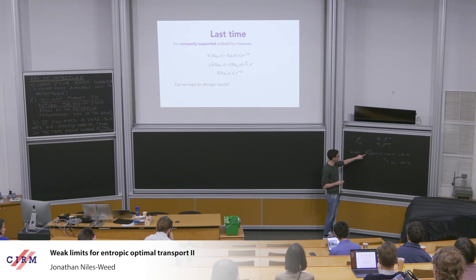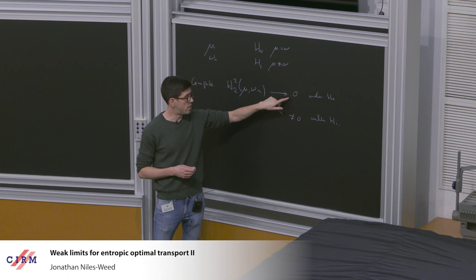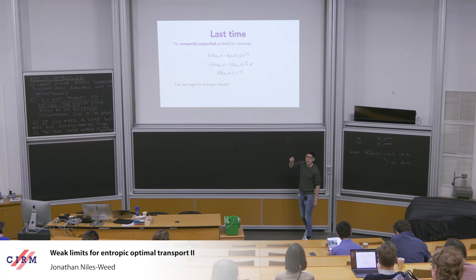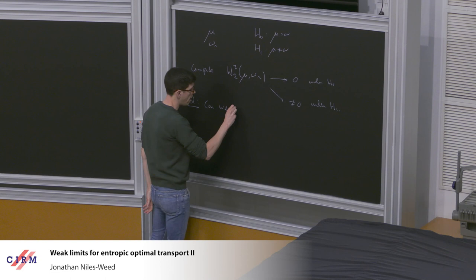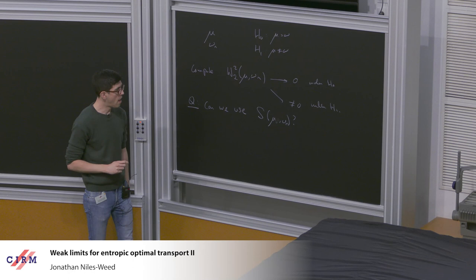Just as with any metric on the space of probability distributions, it could give rise to a goodness-of-fit test statistic. Several groups have advocated using this object. However, as we talked about last time, even when mu equals nu, this convergence to zero is very slow. The gap needed to consistently distinguish between the two hypotheses is quite large. So it's natural to seek the same sort of test but using the regularized transport distance instead, which converges faster at the rate n to the negative one-half.